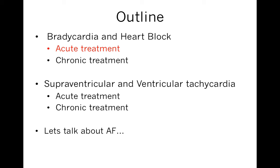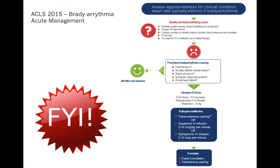Let's first discuss the acute treatment of bradycardia and heart block. This is a slide from the ACLS guidelines looking at acute management of bradycardia. The first thing to do in any emergency situation is to assess the ABCs: airway, breathing, and circulation. We always want to maintain a patent airway, make sure the patient's breathing. If they're hypoxemic, place them on oxygen, and then place them on a cardiac monitor and assess the blood pressure and oximetry. IV access needs to be obtained in order to administer medications and get a 12-lead ECG if there is time to do so.